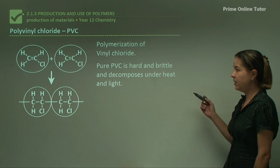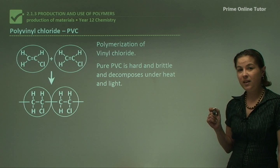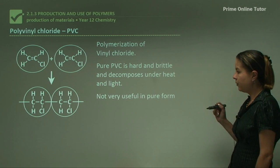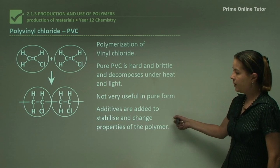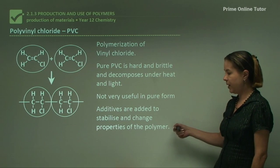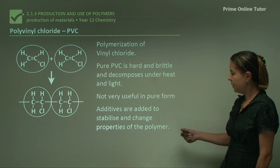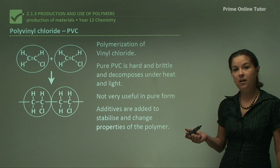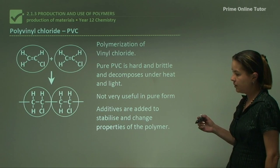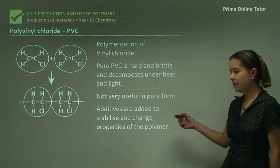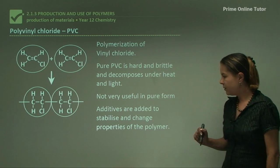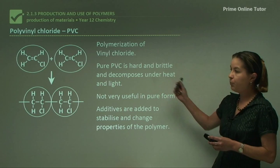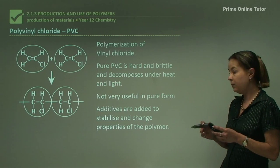Pure PVC is hard, it's brittle, and it decomposes under heat and light, so it's not very useful in its pure form. The way we make it useful is we add additives to stabilise and change the properties of the polymer. There are two types of additives: stabilisers and plasticisers. Examples of stabilisers are metal-based stabilisers, and plasticisers will make the PVC more flexible, less brittle, and more easily worked into shapes.